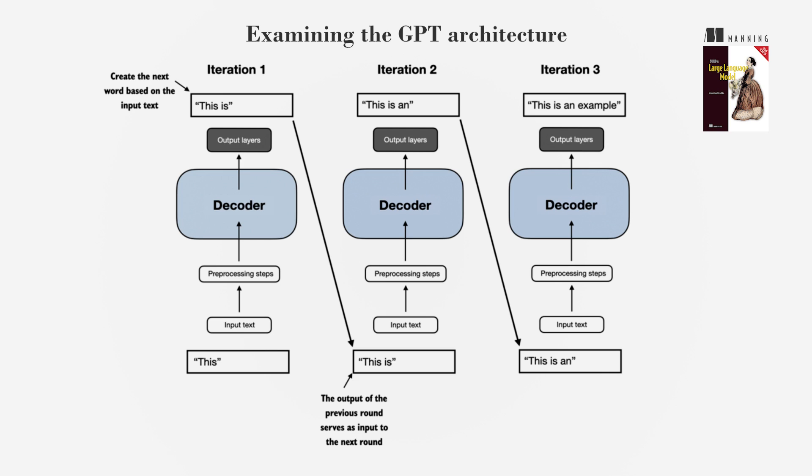The GPT architecture is a transformer model focusing on the decoder. GPT models can perform tasks like translation without explicit training, demonstrating emergent behavior from large-scale training.